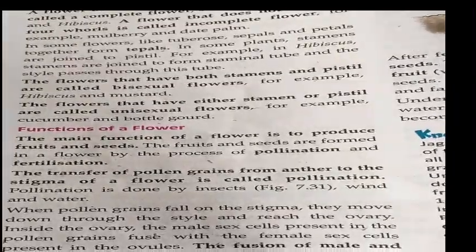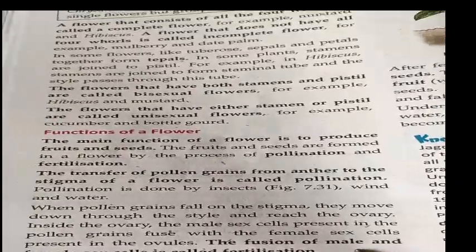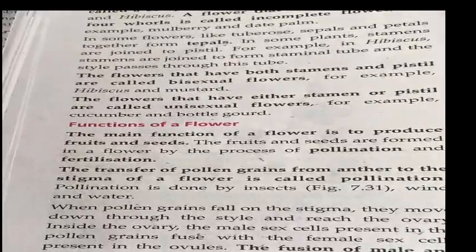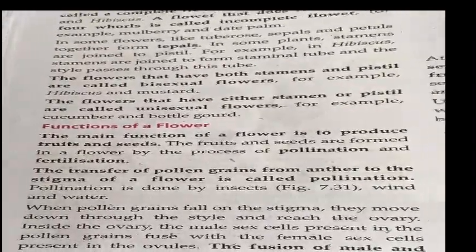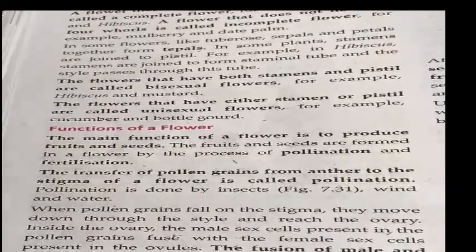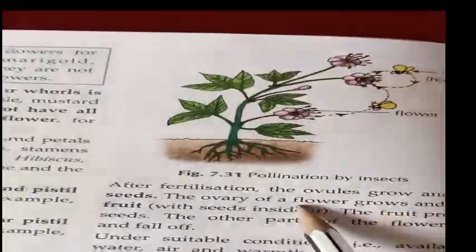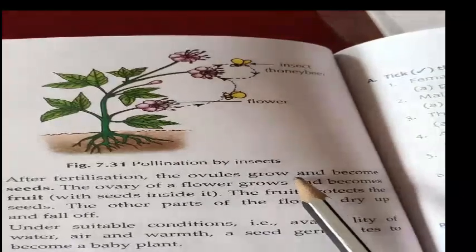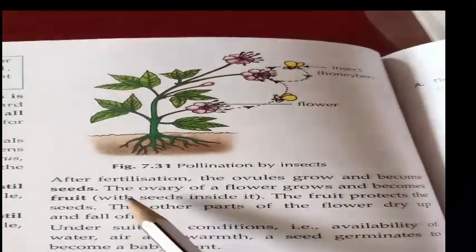The fusion of the male sex cell and the female sex cell is called fertilization. The male sex cell comes from the pollen grain, and the female sex cell is the ovule. The fusion of the pollen grain's male sex cell with the ovule's female sex cell is called fertilization.